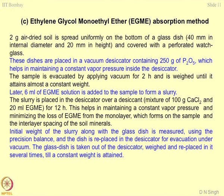The fourth method is ethylene glycol monoethyl ether, EGME. Two grams of air-dried soil is spread uniformly on the bottom of a glass dish — 40 mm diameter and approximately 20 mm height — covered with perforated glass. These dishes are placed in a vacuum desiccator containing 250 grams of phosphorous pentoxide, which helps in maintaining a constant vapour pressure inside. The sample is evacuated by applying vacuum for 2 hours and weighed until it attains almost constant weight.